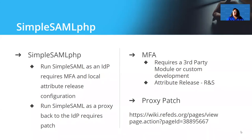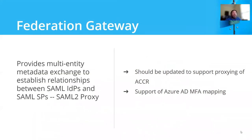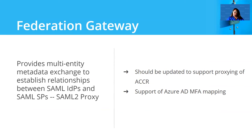Something else that Unicon runs is an IDP proxy we call our Federation Gateway. It provides multi-entity metadata exchange to establish relationships between SAML IDPs and SPs — in short, it's a SAML 2 proxy. We will be shortly updating to ensure that our Federation Gateway supports the proxying of that authentication context class ref, and we will be supporting Azure AD MFA for any clients interested in using Azure AD as their backing IDP. This is actually a hosted service that we provide and fully manage for you.